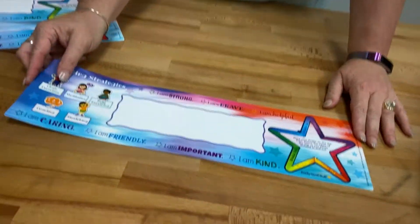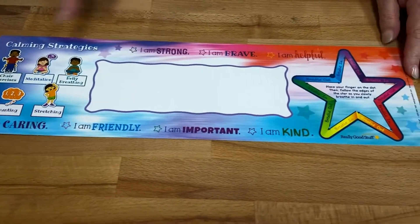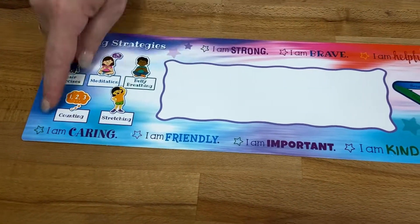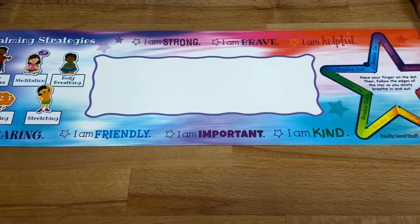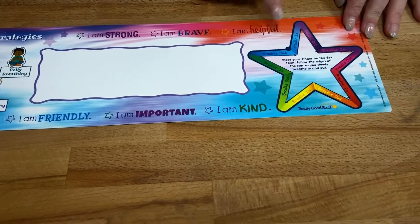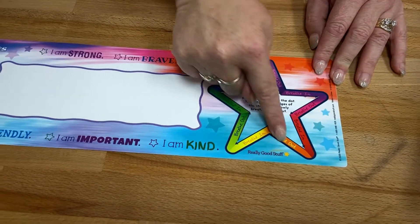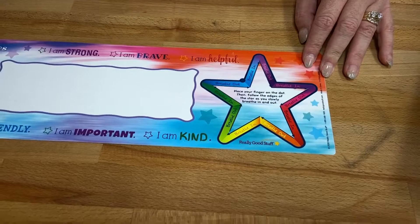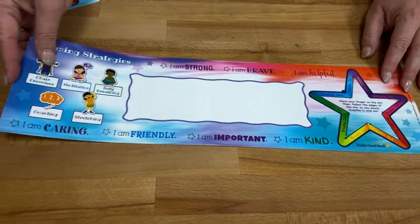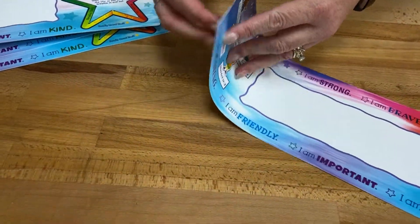Here's another activity — this is our breathing star. Start with your eyes on the dot and then follow the edges of the star as you slowly breathe in and out to manage your emotions. Over here we have some positive affirmations: I'm strong, I'm brave, I'm helpful, I'm caring, I'm friendly, I'm important, I am kind. This is a great reminder to have on the kids' desks every day.